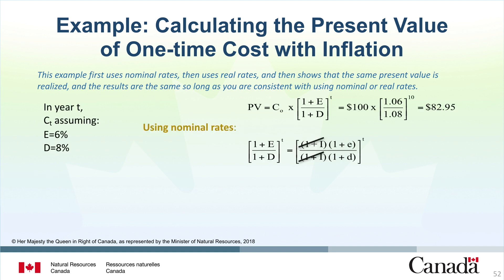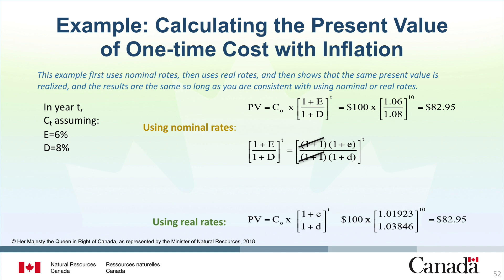Let's work through an example of how to calculate the present value of a one-time cost with inflation using nominal rates and then real rates. This example first uses nominal rates, then uses real rates, and then shows that the same present value is realized — results are the same as long as you are consistent with using nominal or real rates. Using nominal rates with a nominal escalation rate of 6%, discount rate of 8%, and cost C-zero of $100, you get a result of $82.95. Using real rates and plugging in the calculated values, you again get the same result of $82.95.